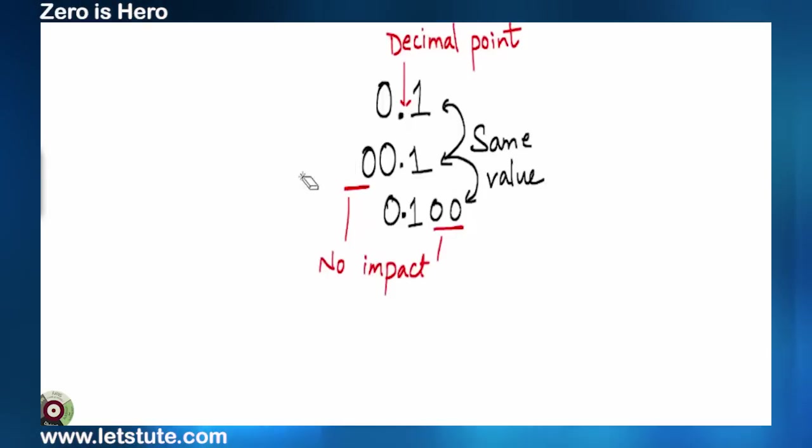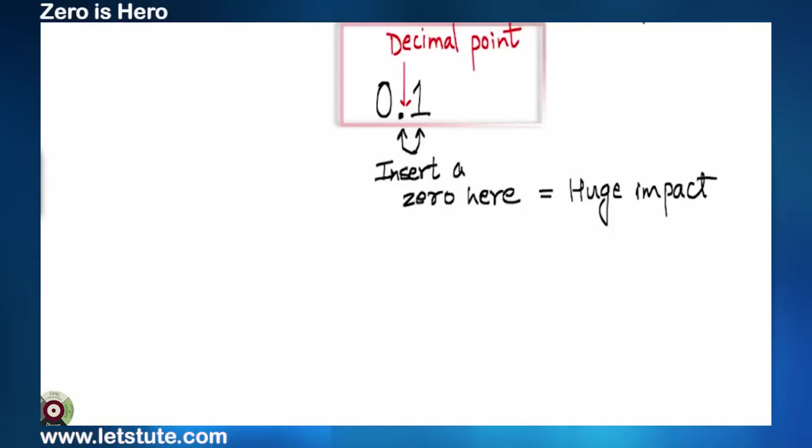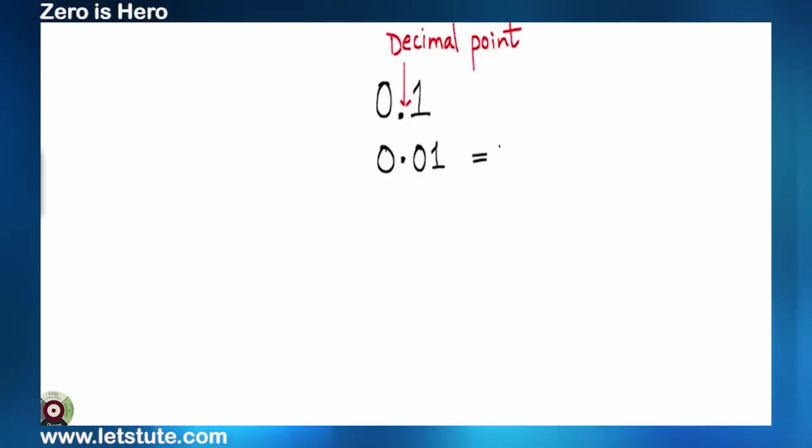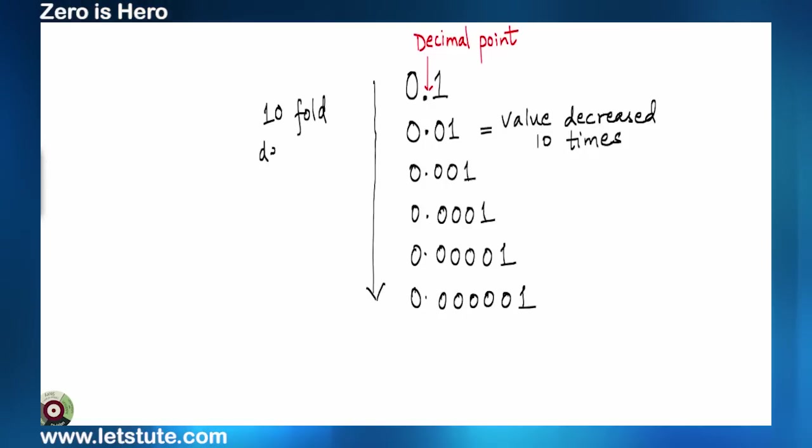But let me tell you, there is one place where zero would affect the number. That is, between decimal point and one. If we increase one zero, the value is 10 times smaller. And if we keep on increasing the number of zeros after decimal point and before one, it makes the value of the given number even smaller.